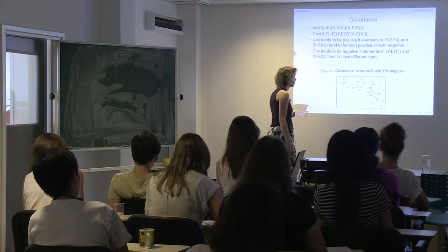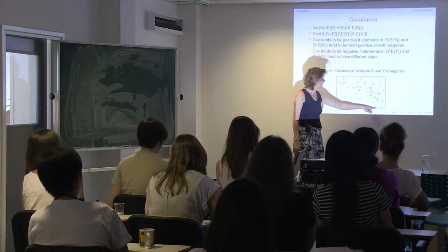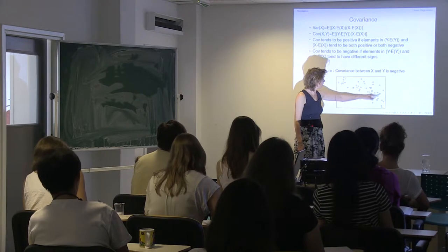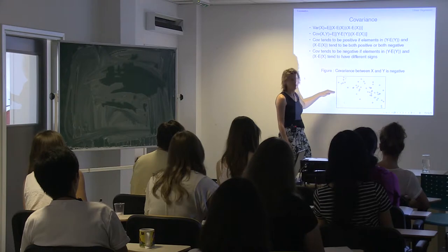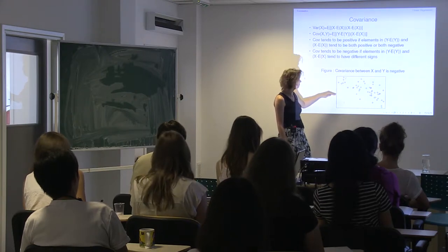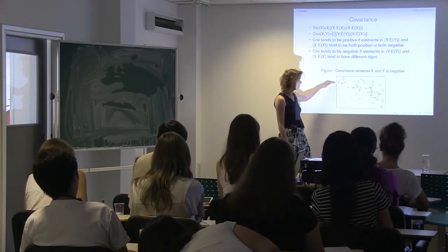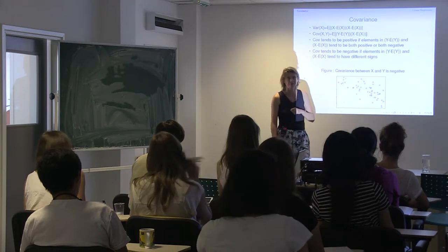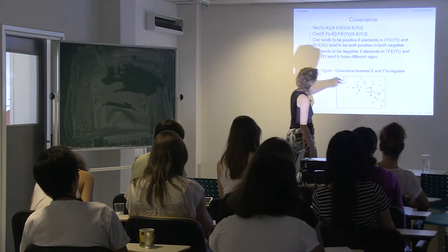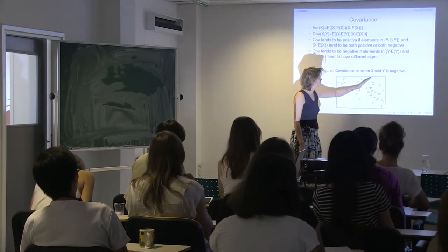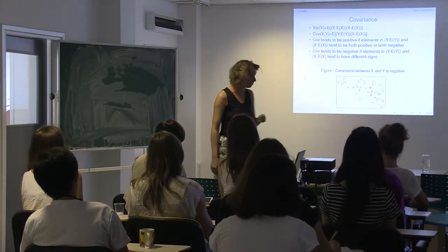If it's the other way around — where X minus the expectation is positive but Y minus the expectation of Y is negative, and vice versa — then the relationship is negative. We see this in the covariance; the covariance in that plot should be negative.